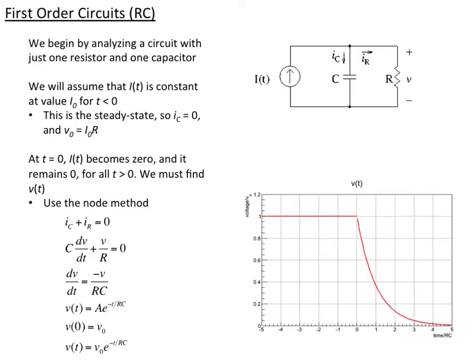With those preliminaries, we can analyze simple circuits with a resistor and a capacitor, or a resistor and an inductor — first we'll do the capacitance case. In both cases we get first-order differential equations, so we call these first-order circuits. We begin with a circuit where I have a current supply that I'll change in time — it's just going to be turned on or off. I have a capacitor and a resistor. At all times up to t equals zero, the current is on at a constant value I₀. In steady state, no current flows through the capacitor, so we have a DC current through a resistor: V₀ equals I₀ times R from Ohm's law.